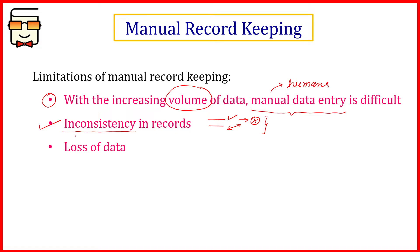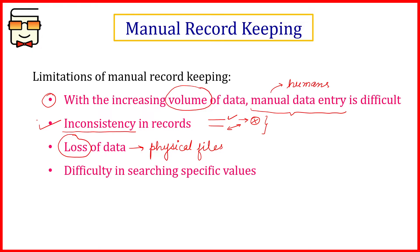Manual record keeping is also very much susceptible to loss of data because generally humans store data in physical files. Physical files can be easily damaged in case of fire, floods, or any kind of environmental factor which affects pen and paper. The next limitation is that it is very difficult to search for records when they are maintained in files, because you have to go through every file manually and search every line to find the desired record. So it becomes very hectic with large data.